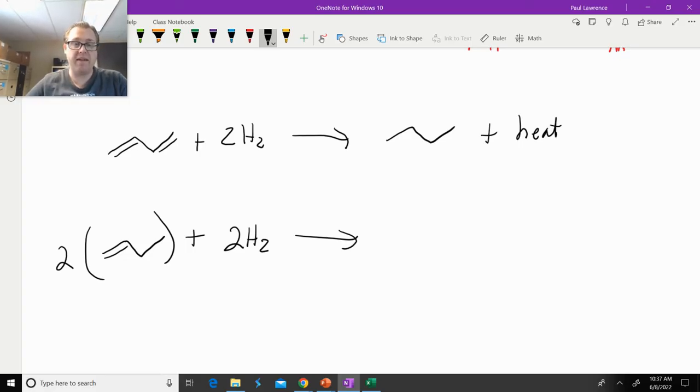Since we're using two moles of hydrogen, we're going to need two moles of the alkene. We're just keeping everything consistent, two pi bonds, a total of two pi bonds. And then that's going to give us the same exact product. It's going to give us the alkane, and it's going to also give us heat.